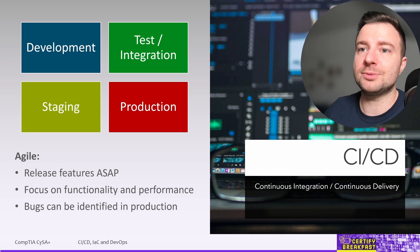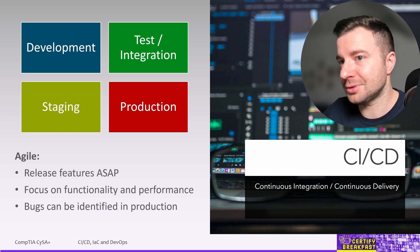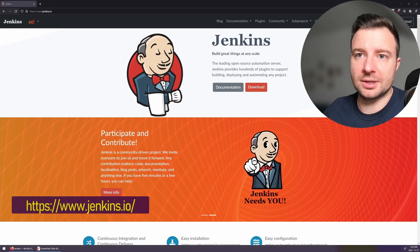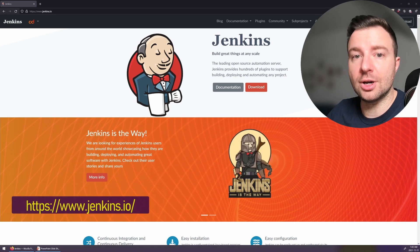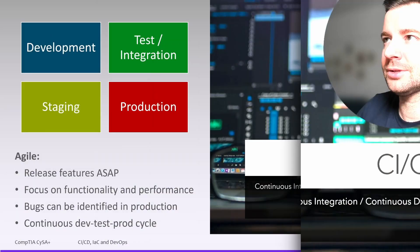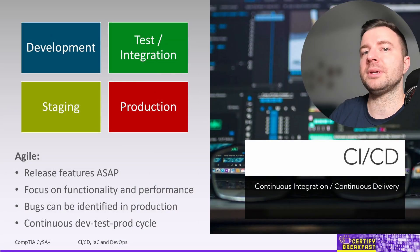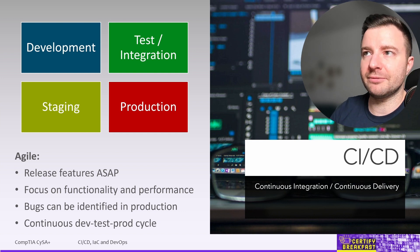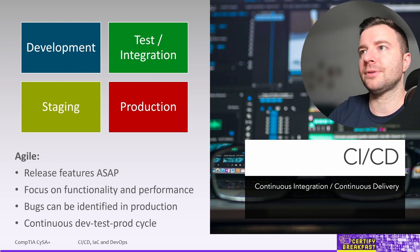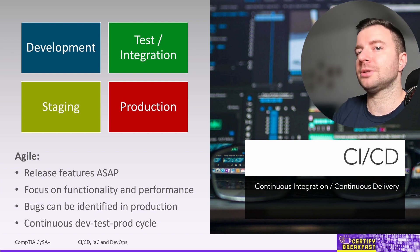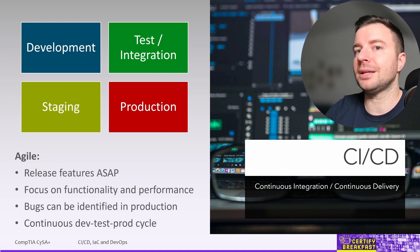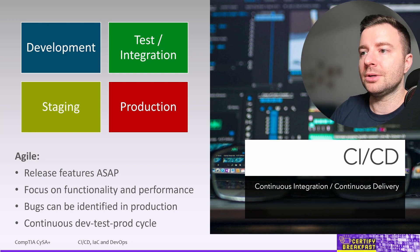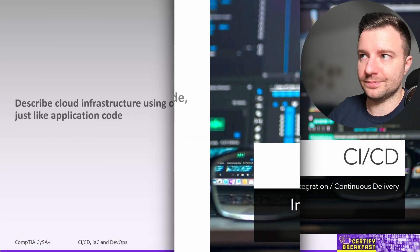If you want to find out more about the most popular open source software for CI/CD, I would advise you to have a look and try to install Jenkins and play with it — it's free and open source. In short, with CI/CD we get this continuous cycle through the development phase, testing phase, implementation into production, integration into production, and then back again for each and every new iteration, each and every new feature, or each and every new bug fix.